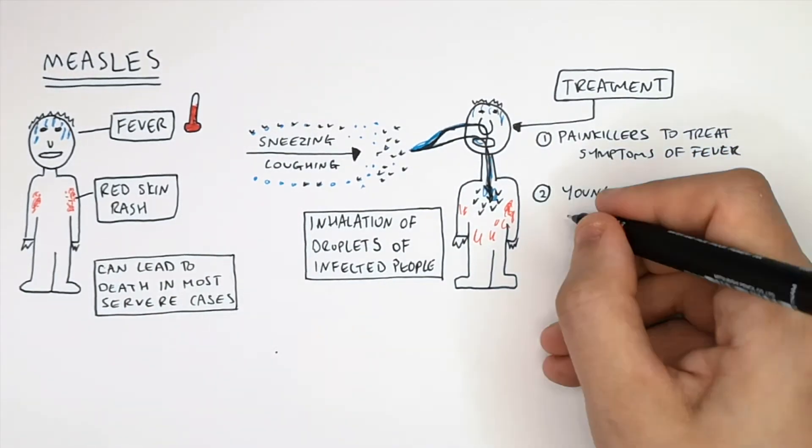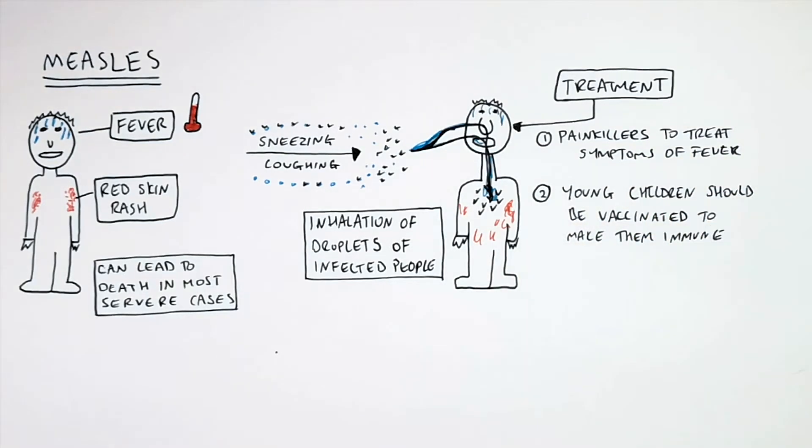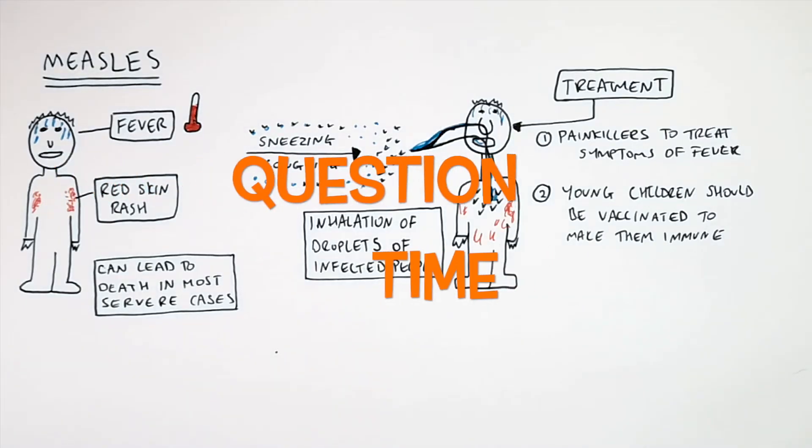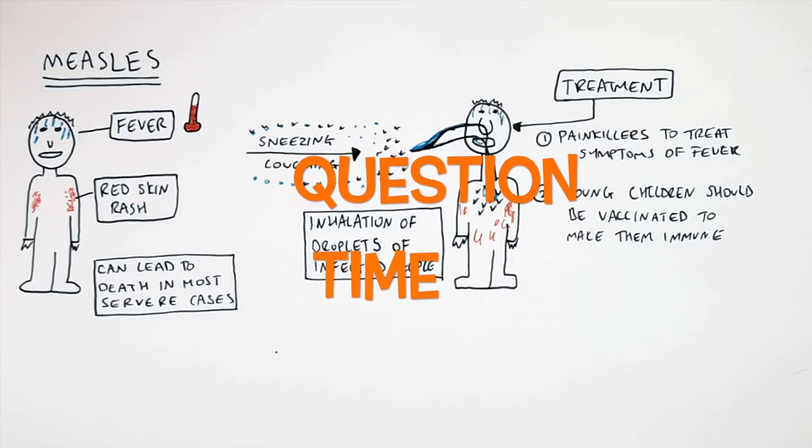And young children should be vaccinated to make them immune to the disease. So young children should be vaccinated against measles. It's question time. Attempt these questions to check your understanding.